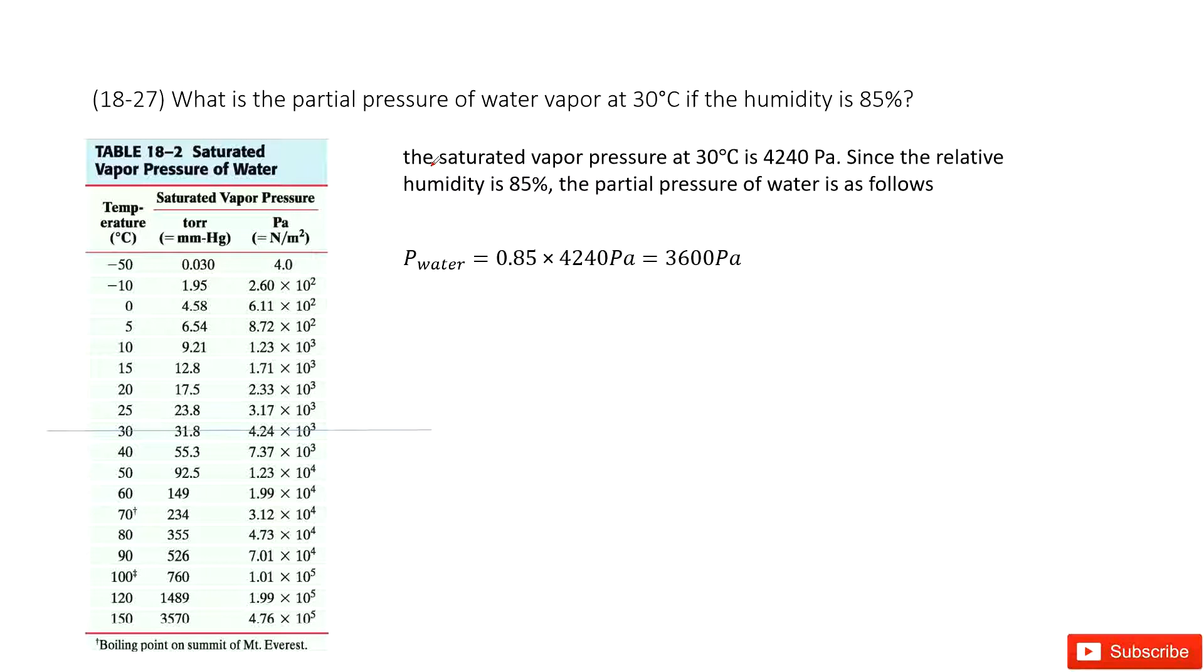We have water vapor and we need to find partial pressure. The temperature is 30 degrees Celsius and the humidity is 85 percent. So first, we look at the table 18-2, right? It is about saturated vapor pressure of water.